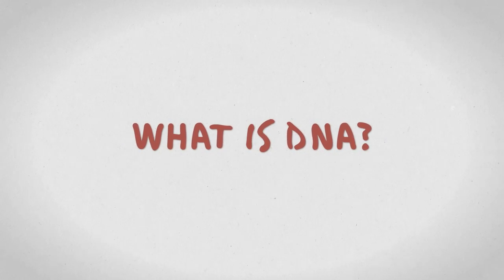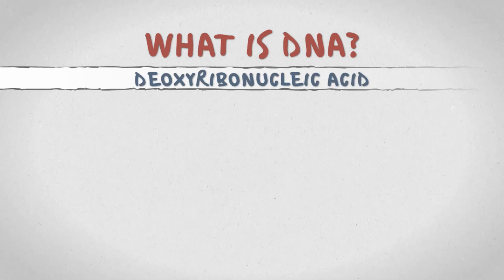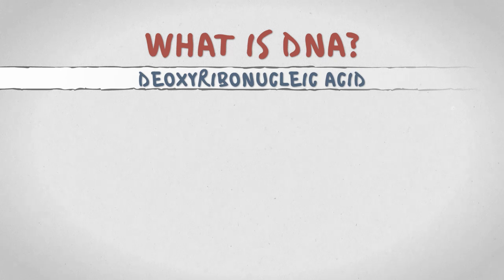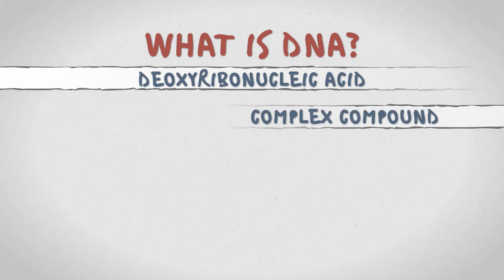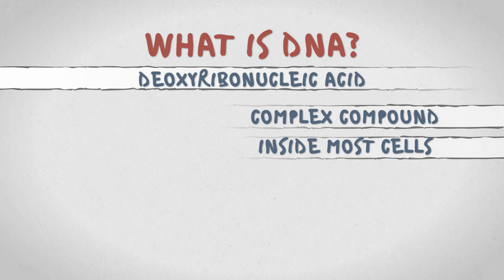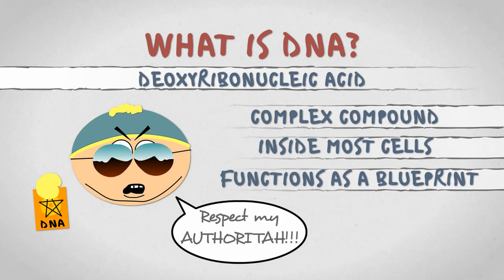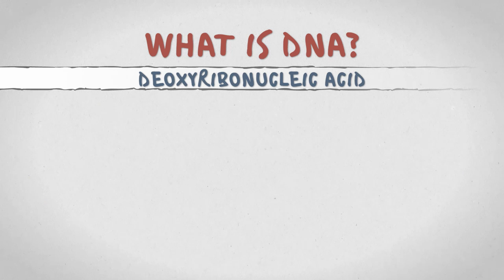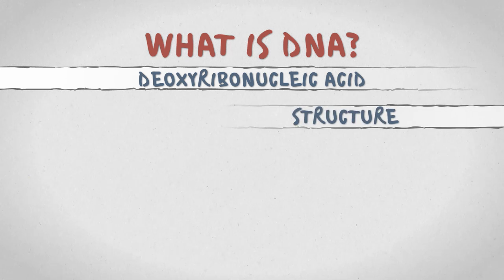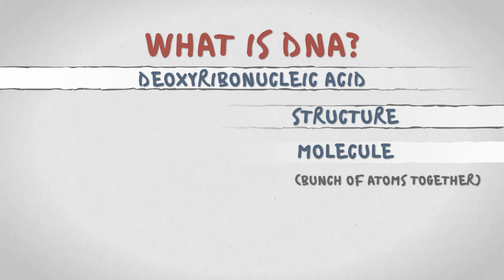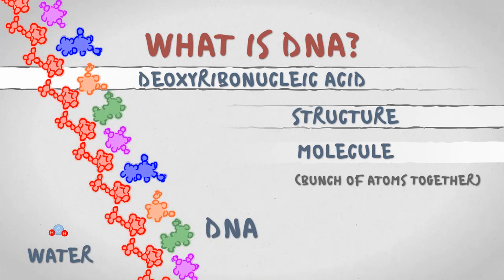So what is DNA? DNA is short for deoxyribonucleic acid, a compound found in almost every cell of your body, serving as a microscopic commander-in-chief. To understand how this happens we need to look at the structure of DNA. DNA is a molecule, a bunch of atoms bound together, like water but far more complicated.